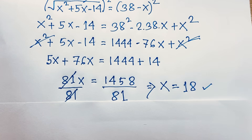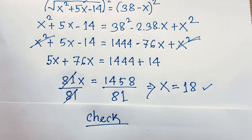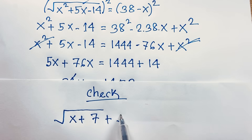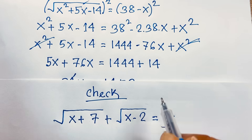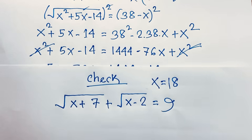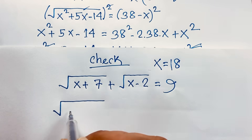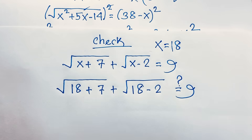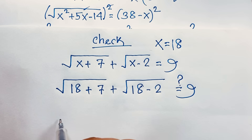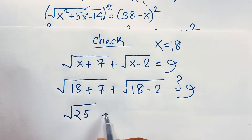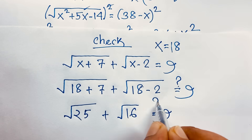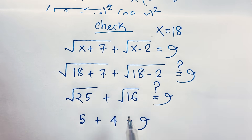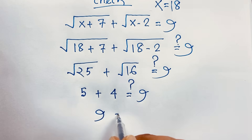Let's verify our answer. The original question is: square root of (x plus 7) plus square root of (x minus 2) equals 9, where x equals 18. Substituting: square root of (18 plus 7) plus square root of (18 minus 2) equals 9. That is square root of 25 plus square root of 16, which is 5 plus 4, equals 9.